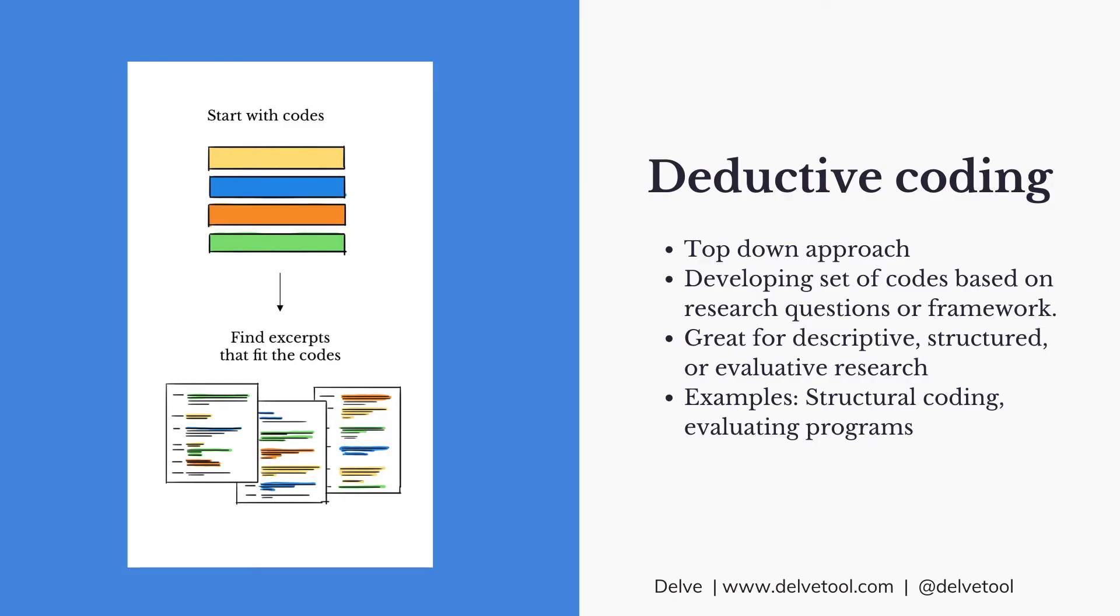So deductive coding is a top-down approach to coding. This is when you start with a set of codes based on either research questions or a framework or something else. Then you take those codes and look at your data to see what parts of your data fit those codes.